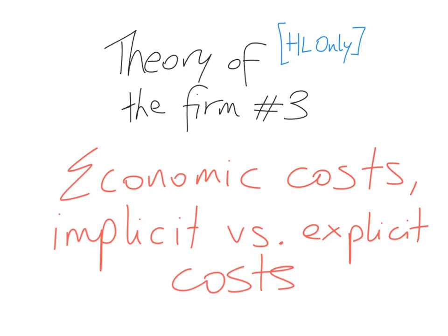This is the third video in the series about theory of the firm. This is in the IB Economics higher level only component. In this video I will look at economic costs and the difference between implicit and explicit costs.